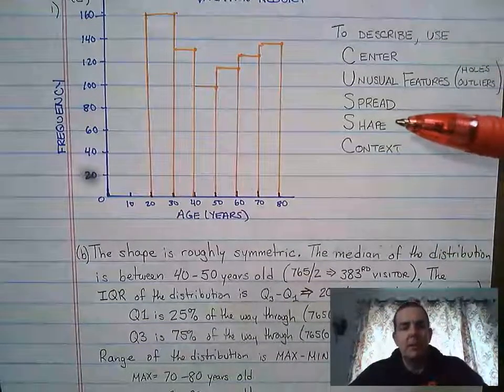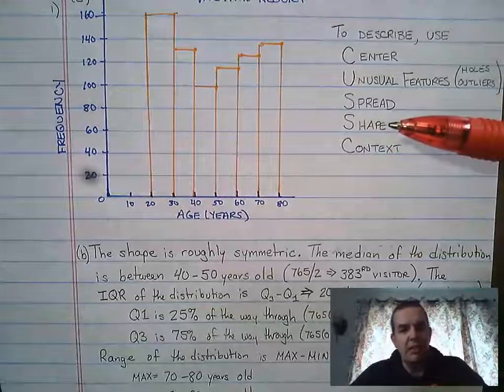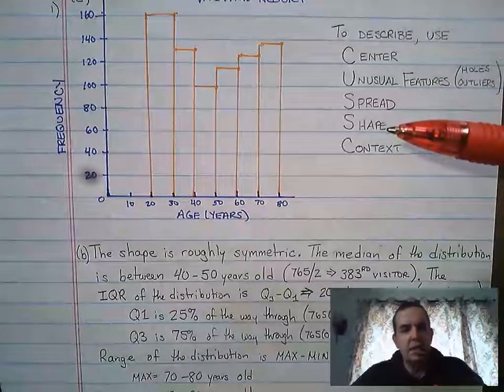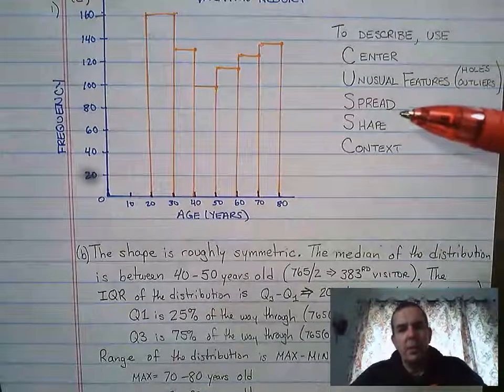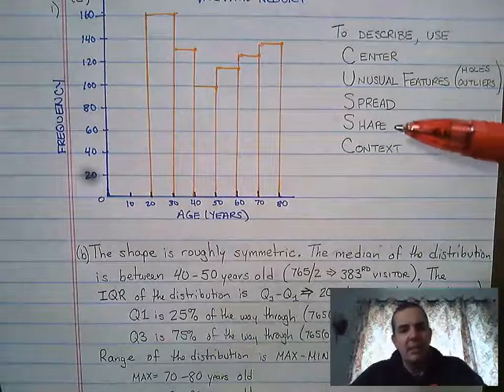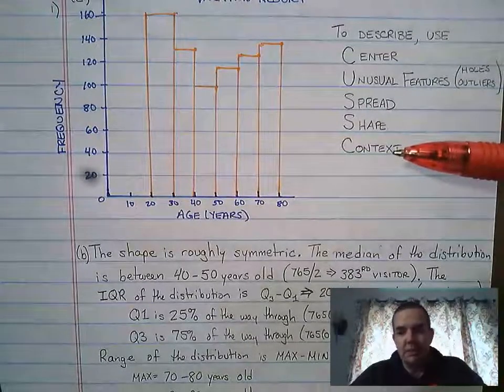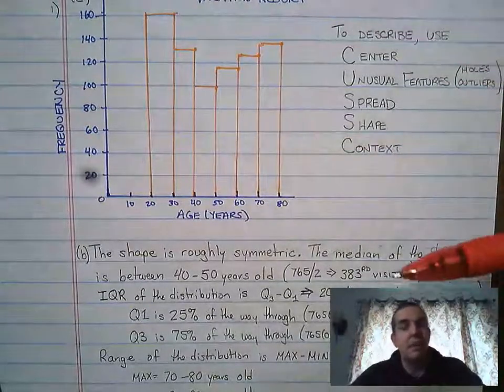Shape. On shape on this one, we would use one of three. It's either going to be roughly symmetric, skewed left, or skewed right. We'll talk about that in a moment. And then context, we need to talk about what we're talking about. So in this case, the adult visitors at a vacation resort.